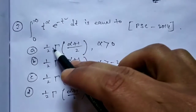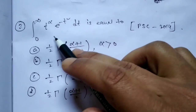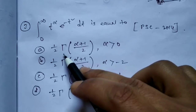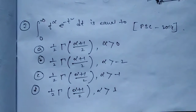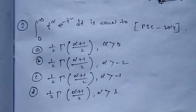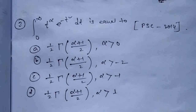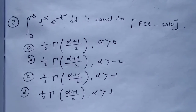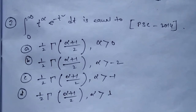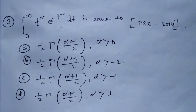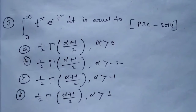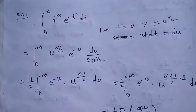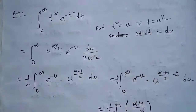Problem 3 (PSC 2014): The integral from 0 to infinity of t^α · e^(−t²) dt equals which option? (a) (1/2)·Γ((α+1)/2), α > 0; (b) (1/2)·Γ((α+1)/2), α > −2; (c) (1/2)·Γ((α+1)/2), α > −1; (d) (1/2)·Γ((α+1)/2), α > 1.